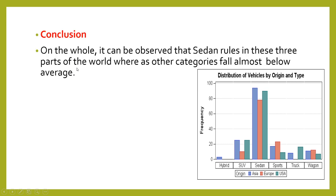The conclusion sums up what is in the graph: 'On the whole, it can be observed that sedan rules in these three parts of the world, whereas other categories fall almost below average.' You can see that sedan's bar is the highest and all other categories are below half of it, which is why we say they fall below average. If we write the paragraph logically step by step, it is not at all difficult.